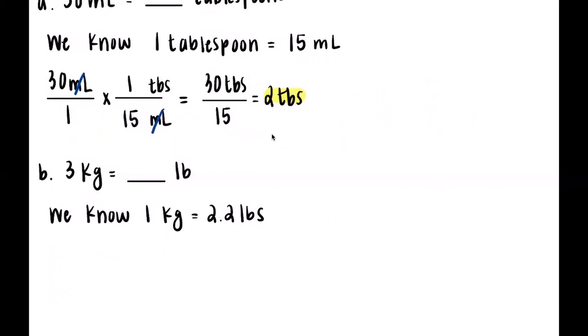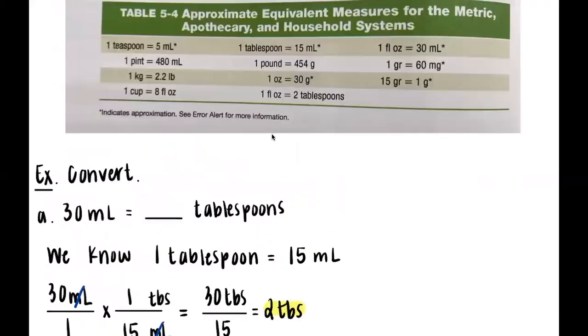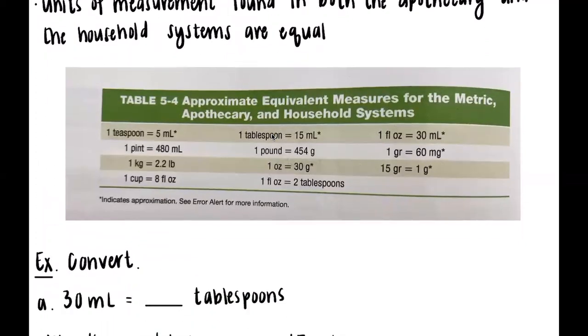Next example: 3 kilograms is equal to how many pounds? First things first, we have to notice what is the equivalent measurement. This is a bit more of a popular one, especially for those who work in the health care system. One kilogram is equal to 2.2 pounds.